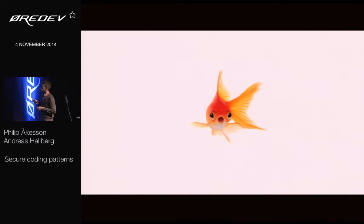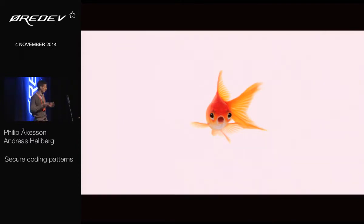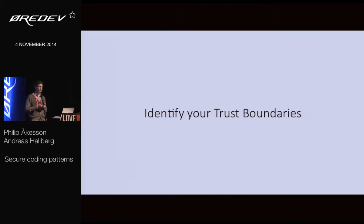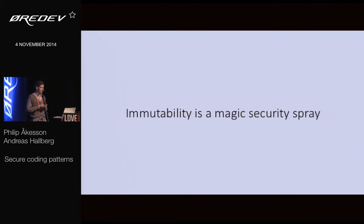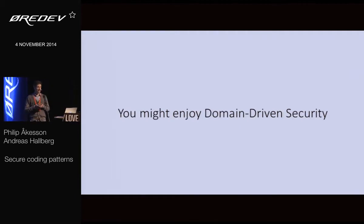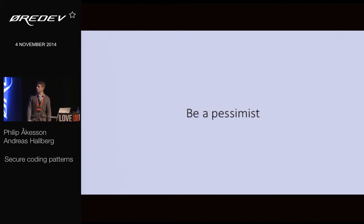So, four things to take away: identify your trust boundaries and know where they are. Immutability is like magic security spray. You might enjoy domain-driven security. And being a pessimist will make you happy.